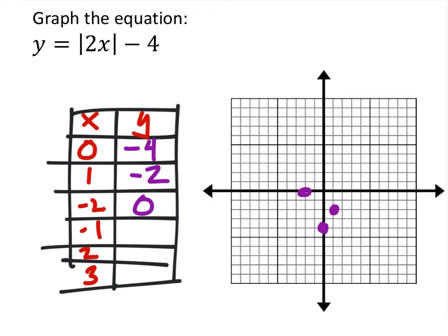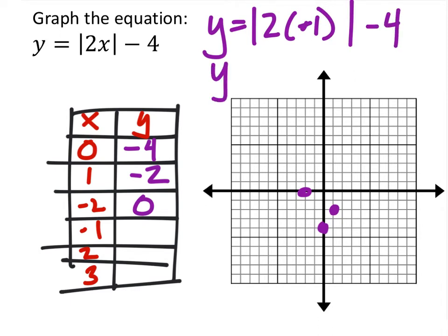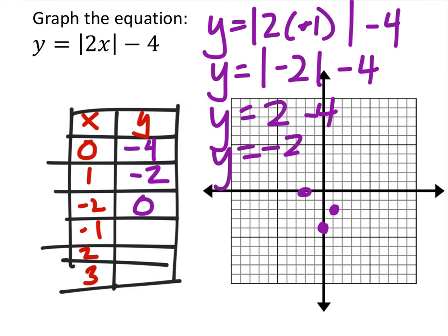We'll do negative one as well. y equals the absolute value of two times negative one minus four. So y equals the absolute value of negative two minus four. Y equals two minus four. Y equals negative two.